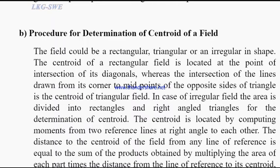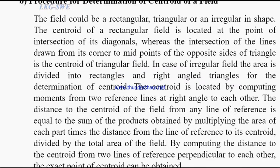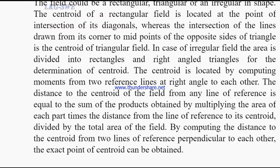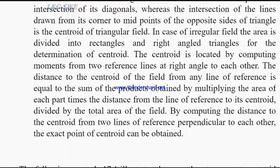In the case of an irregular field, the area is divided into rectangles and right-angle triangles for determination of centroid. The centroid is located by computing moments from two reference lines at right angles to each other. The distance to the centroid of the field from any line of reference is equal to the sum of products obtained by multiplying the area of each part by the distance from the line of reference to its centroid, divided by the total area of the field. By computing the distance to the centroid from two perpendicular reference lines, the exact point of the centroid can be obtained.